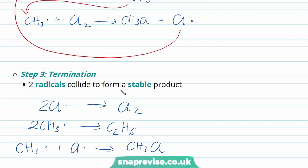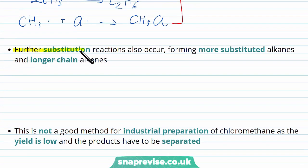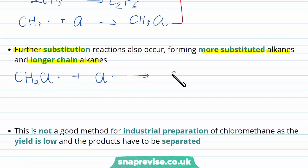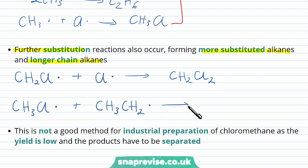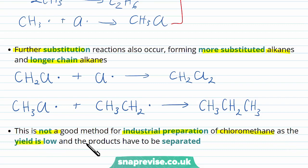Now we've looked at all three steps — initiation, propagation and termination — but it's important to realise this reaction is limited in its utility. Not only do we produce a mixture of products, but further substitution reactions also occur, forming more substituted alkanes as well as longer chain alkanes. Examples include the reaction of a chloromethyl free radical with a chlorine free radical to form dichloromethane, and the reaction of a methyl free radical with an ethyl free radical to form propane. In reality this is not a good method for the industrial preparation of chloromethane (CH3Cl) as the yield is low and the product has to be separated from the mixture.